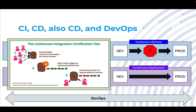Continuous deployment, however, is where there is no stop in the process. There is a complete uninterrupted path from getting code from dev into production. This requires a very high maturity CI and CD process. This is also how leading players, such as Netflix, are deploying to production 100 or so times a day.